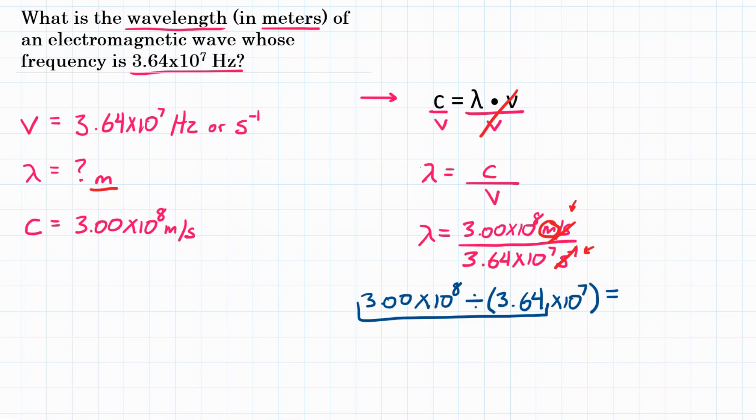So because we do not want it to go in that order, make sure you have it in parentheses. So hit equals, and your calculator should say 8.24175. Let's round that to three significant figures. So our wavelength will be 8.24, and our units are meters.